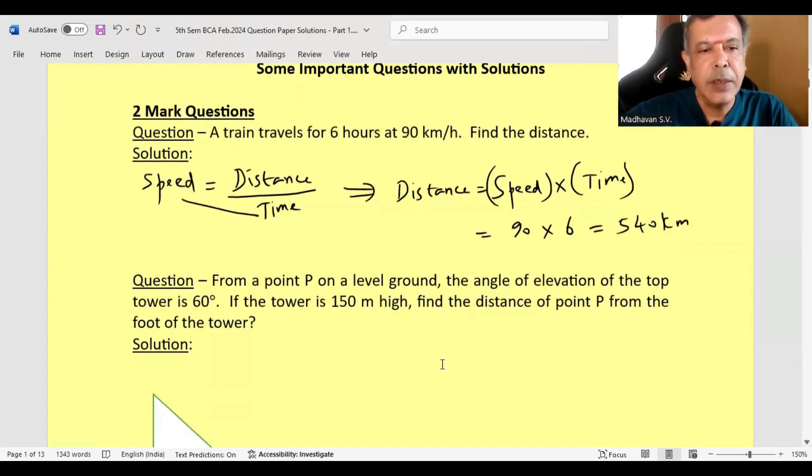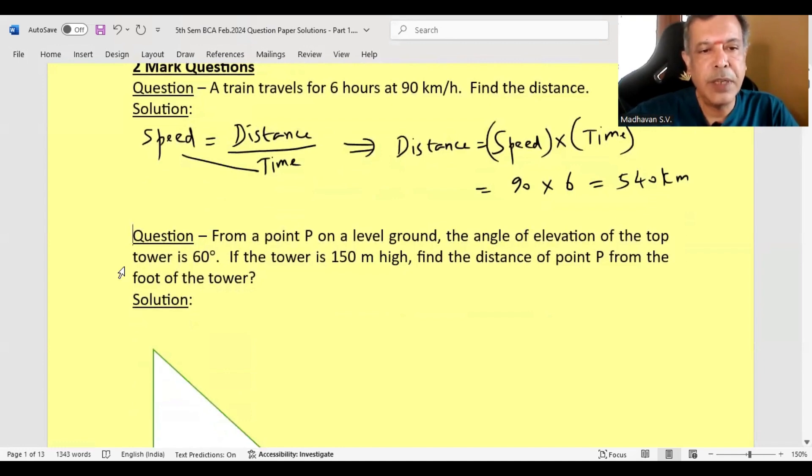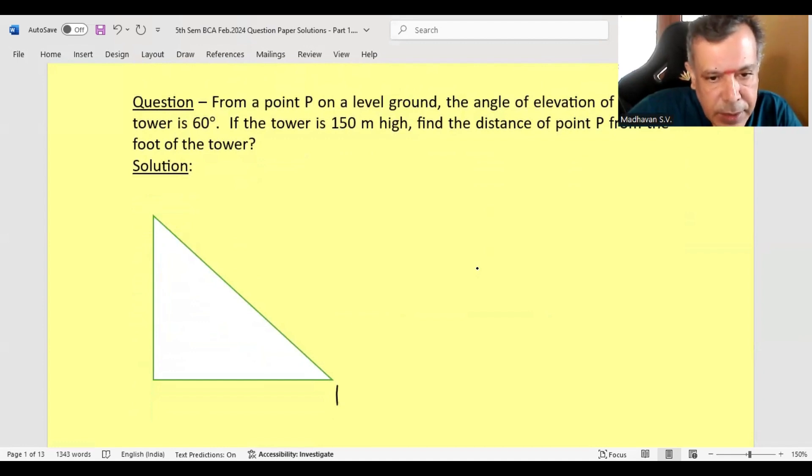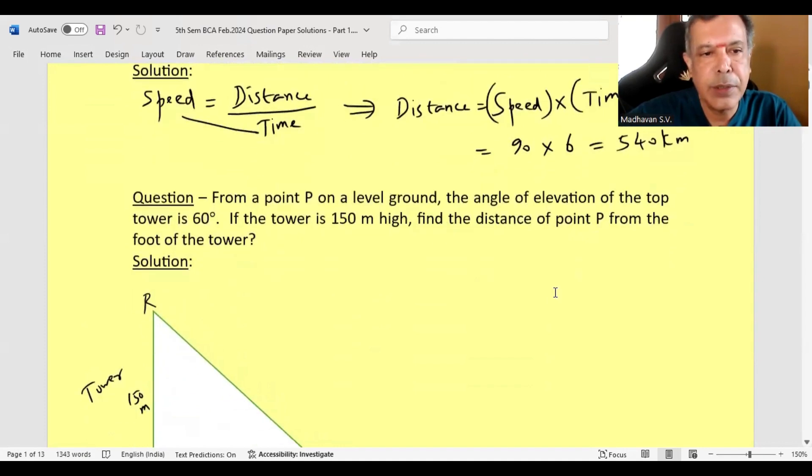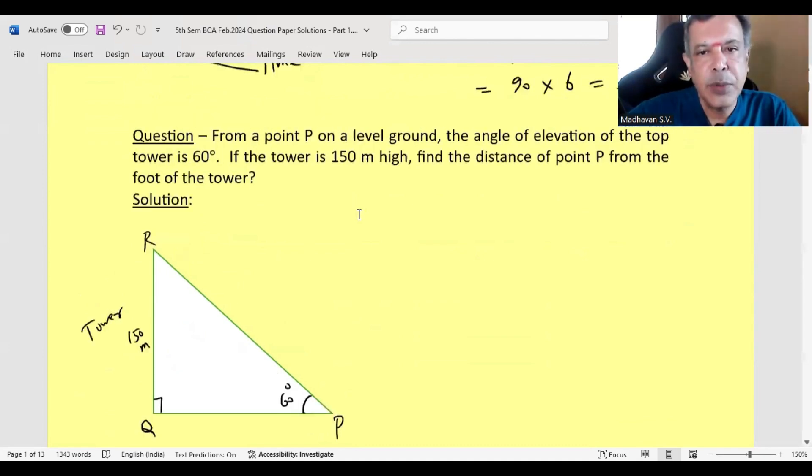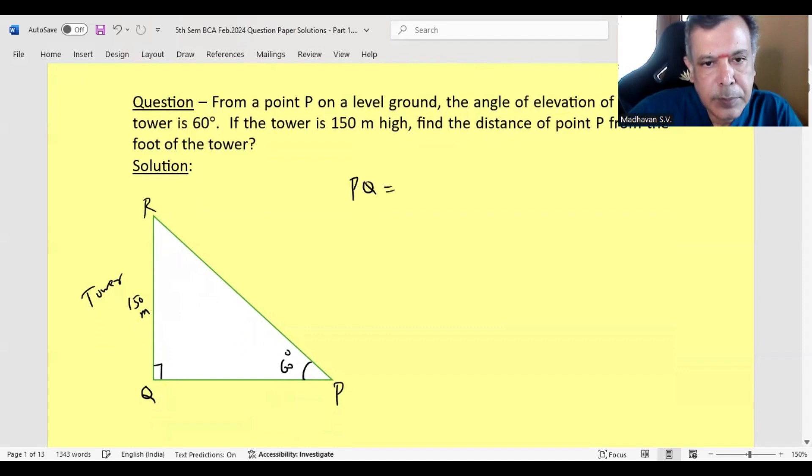Next question: From a point P on a level ground, the angle of elevation to the top of the tower is 60 degrees. If the tower is 150 meters high, find the distance of point P from the foot of the tower. We will consider this as T, this as Q, and this as R. So RQ is the tower. The height of the tower is 150 meters, and the angle of elevation is 60 degrees.